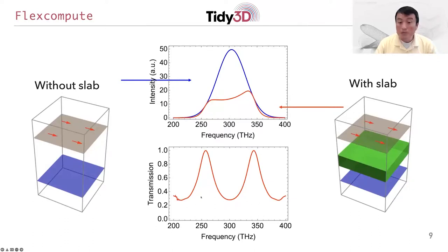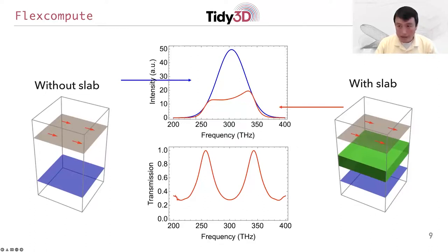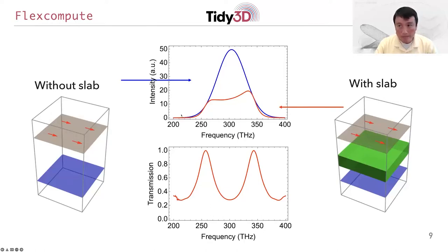You can see that the transmission spectrum looks very nice, especially near the 300 terahertz frequency range — it's very smooth. But near 200 terahertz or 400 terahertz, you can see something strange going on. This comes about by analyzing the incident wave spectrum as indicated by the blue curve. You can see that at 200 terahertz or 400 terahertz, you are really at the wing of this incident spectrum where the power in the incident wave is very small. In this case, you will not get very reliable data about the transmission simply because there's not enough power in the incident wave at those frequencies.